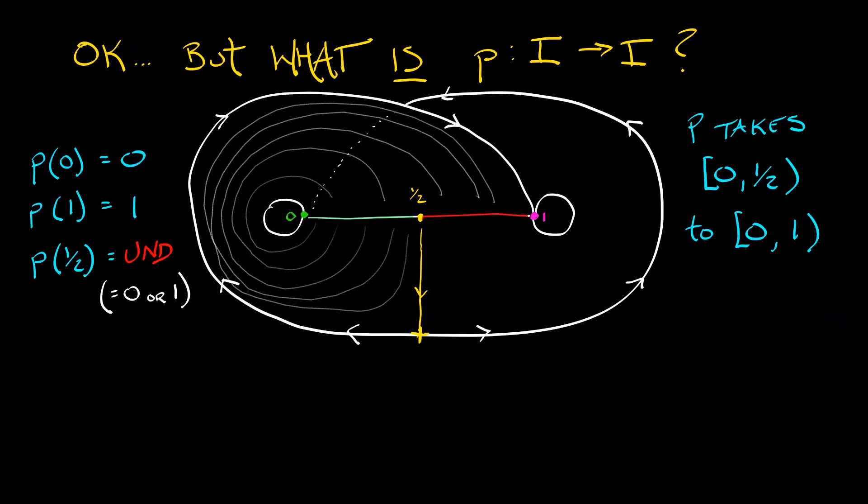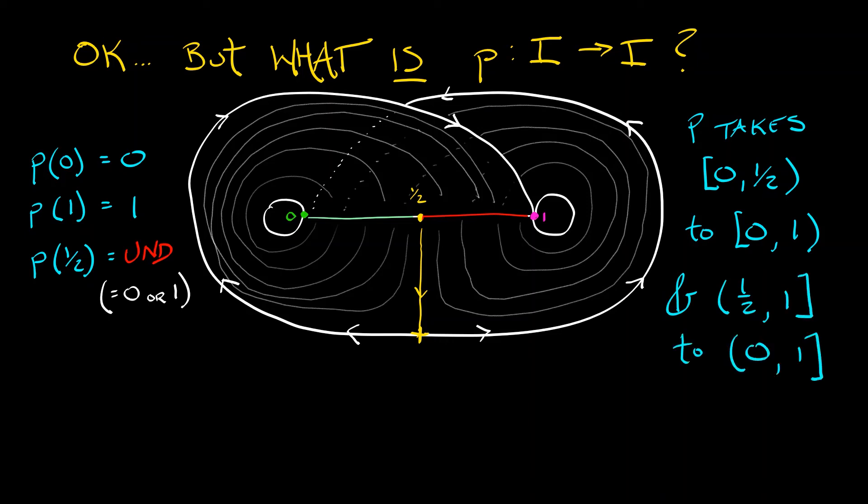For the right-hand interval, the same thing is happening. We're taking the interval that goes from one-half to one, and we flow it forwards. It moves around to the right. It gets stretched out, and it covers the entire interval from zero to one. Now, what function does this? The simplest function that matches this behavior, zero to zero, one to one, stretches the left and the right half intervals over to the entire thing.